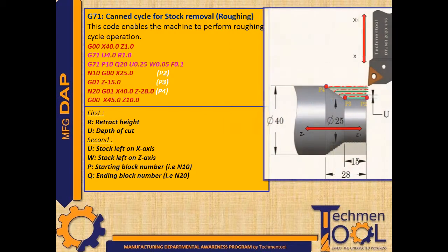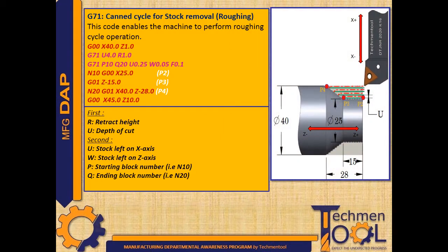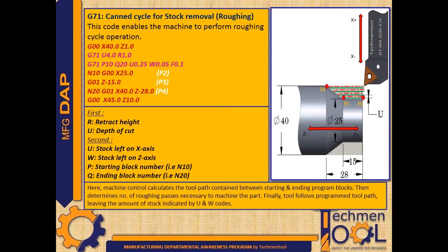This code enables the machine to perform roughing cycle operation. Let us look into a sample program for roughing cycle. Here in the pink colored first block, tool follows G71 canned cycle along with U and R values. U represents depth of cut and R represents retract height of the tool.